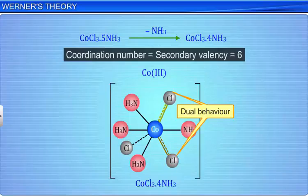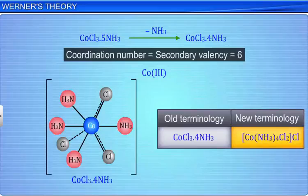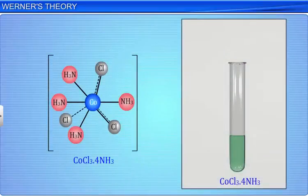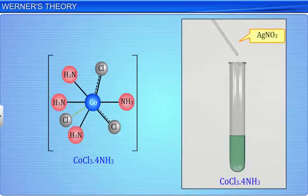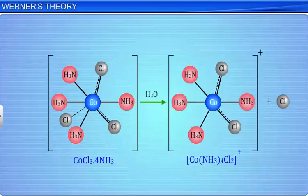Thus, only 1 chloride ion can be precipitated as silver chloride. This complex on ionization gives 2 ions: one [Co(NH3)4Cl2]+ and the other a chloride ion. The structure of the complex is shown here.